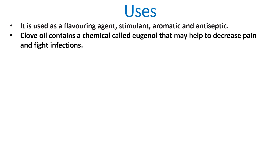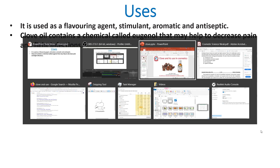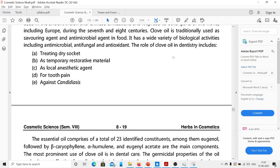Clove oil contains a chemical called eugenol that may help to decrease pain and fight infections. The role of clove oil in dentistry includes treating dry socket, as a temporary restorative material, as a local anesthetic agent, or for tooth pain and against candidiasis.